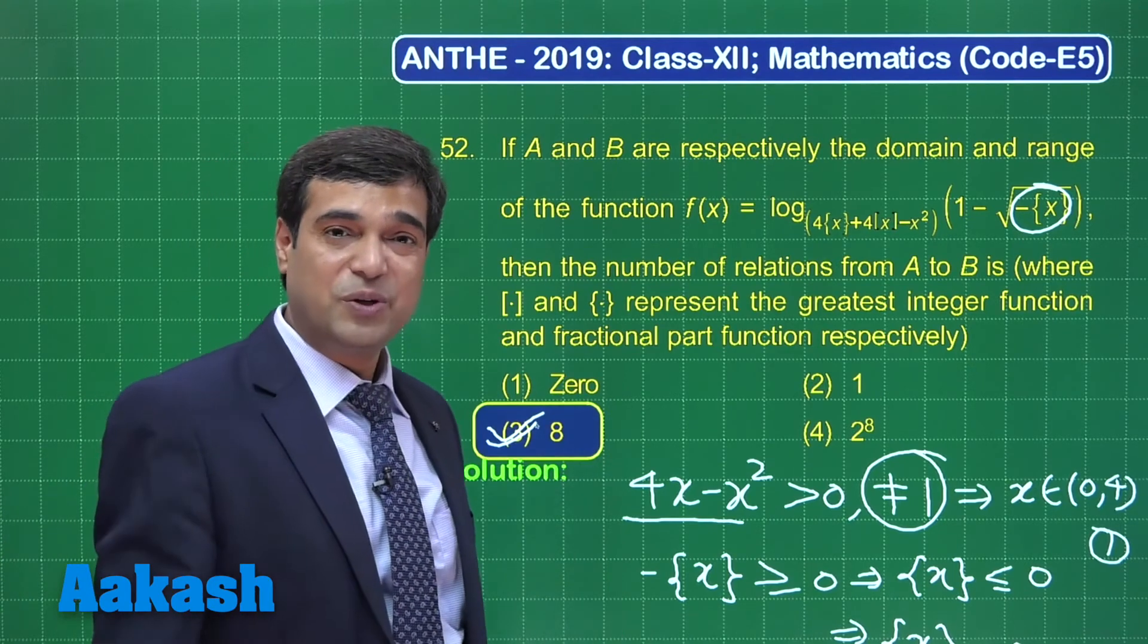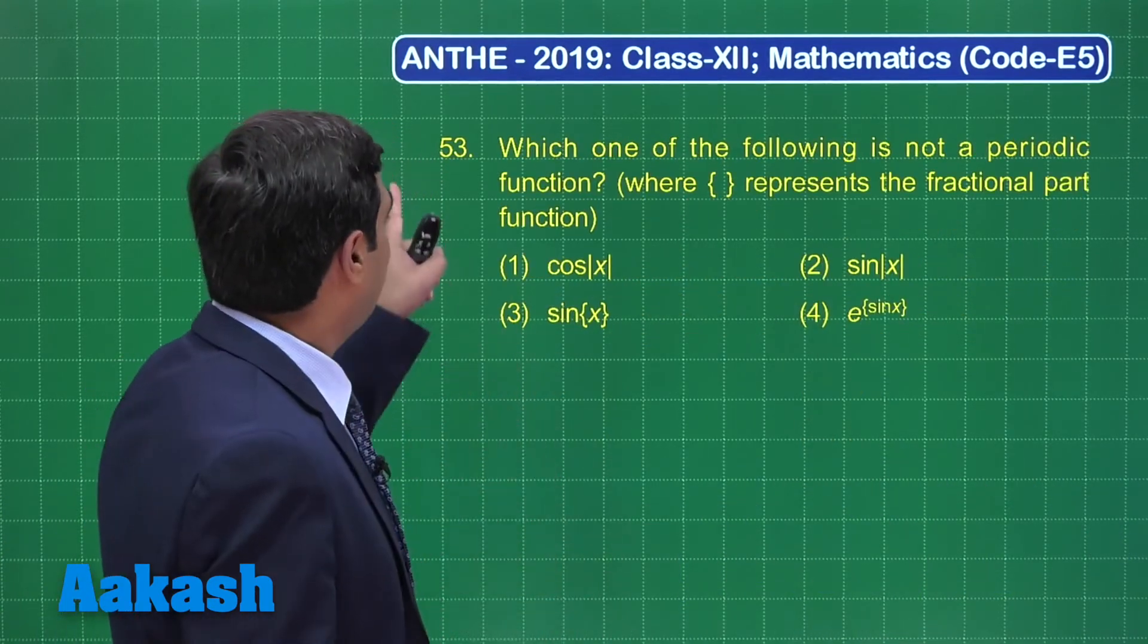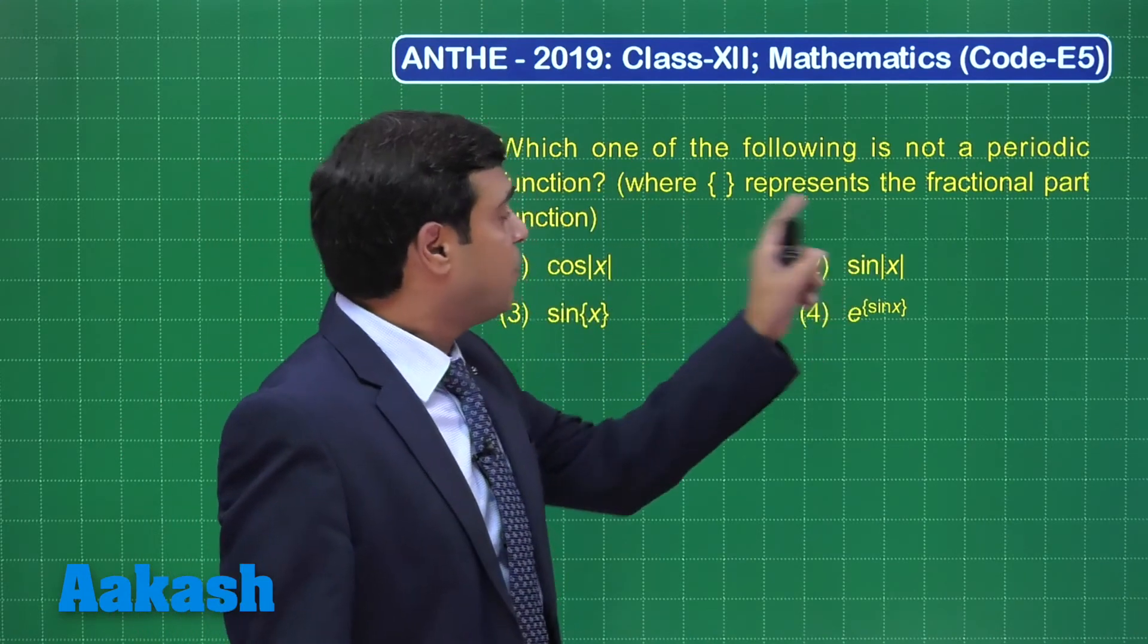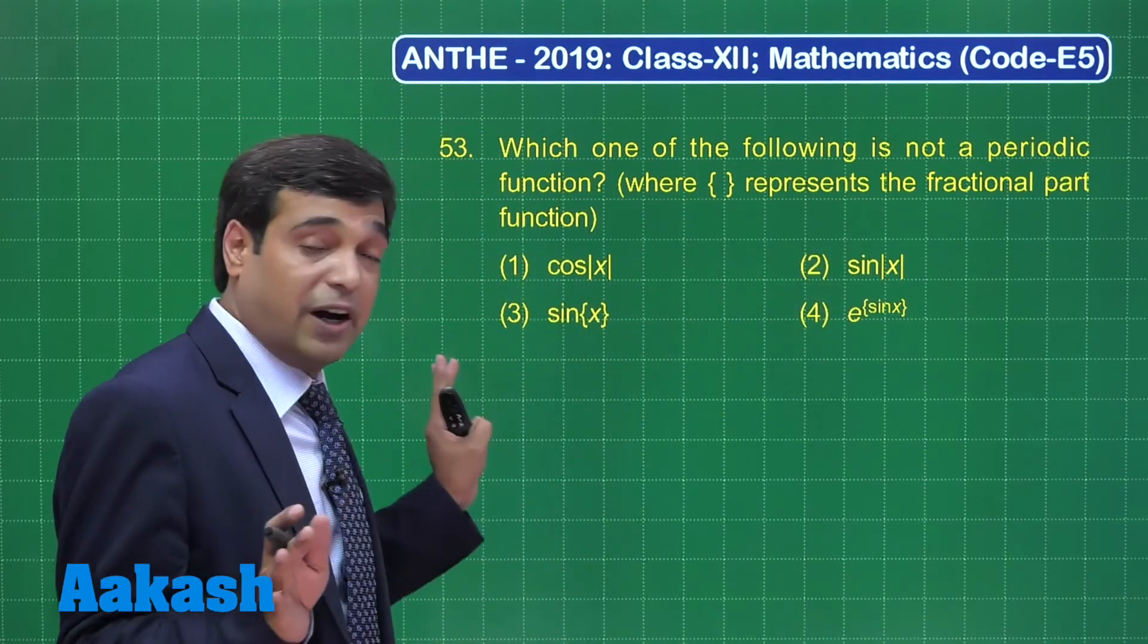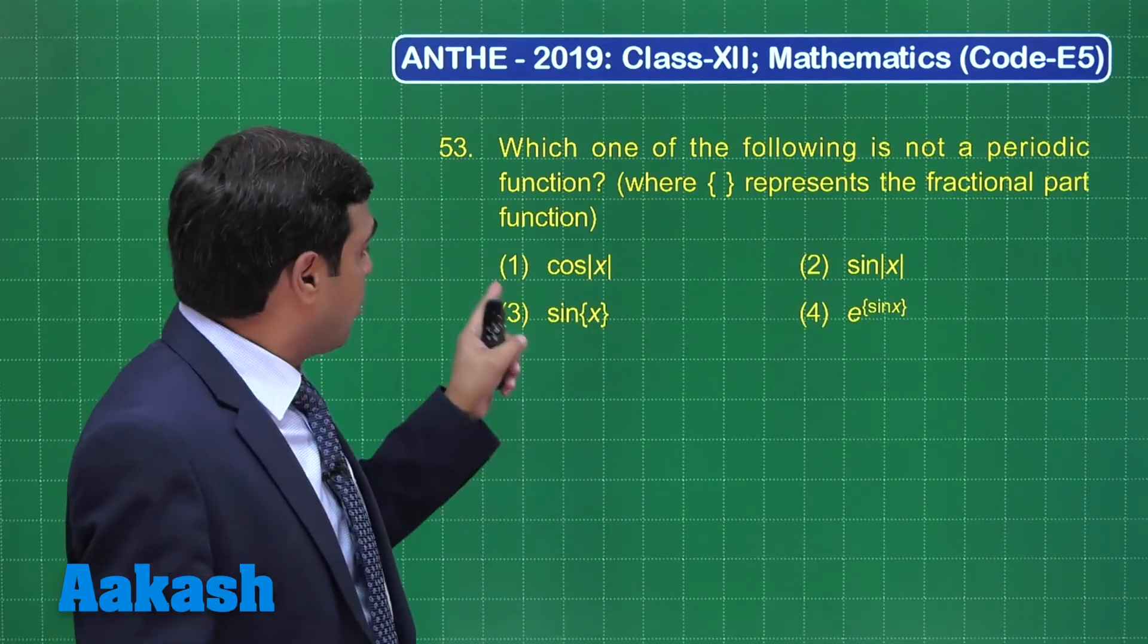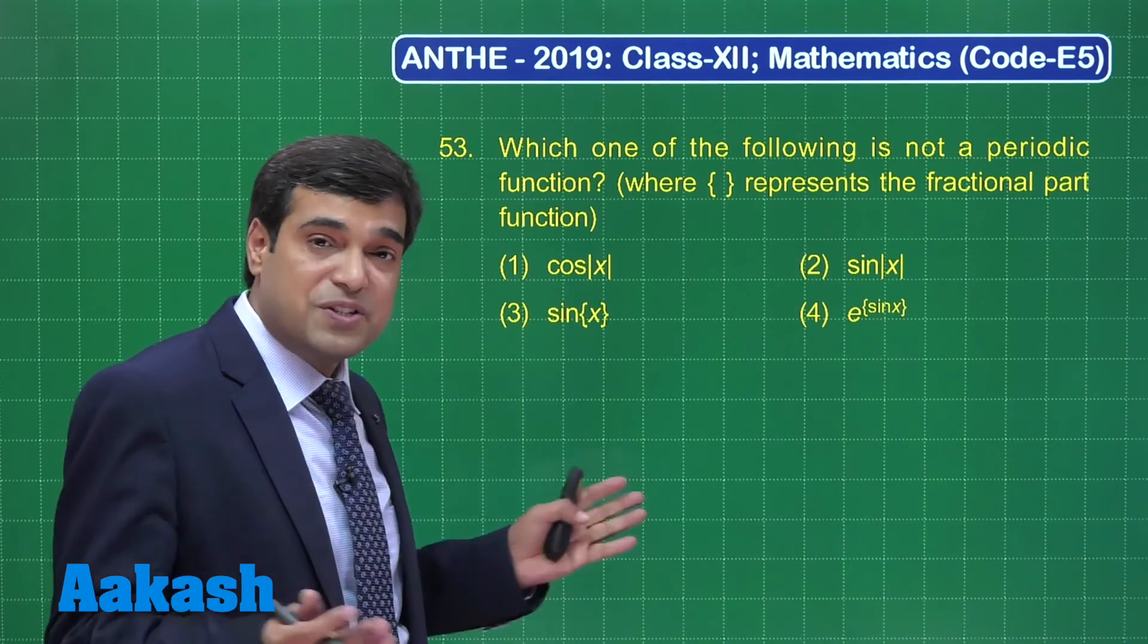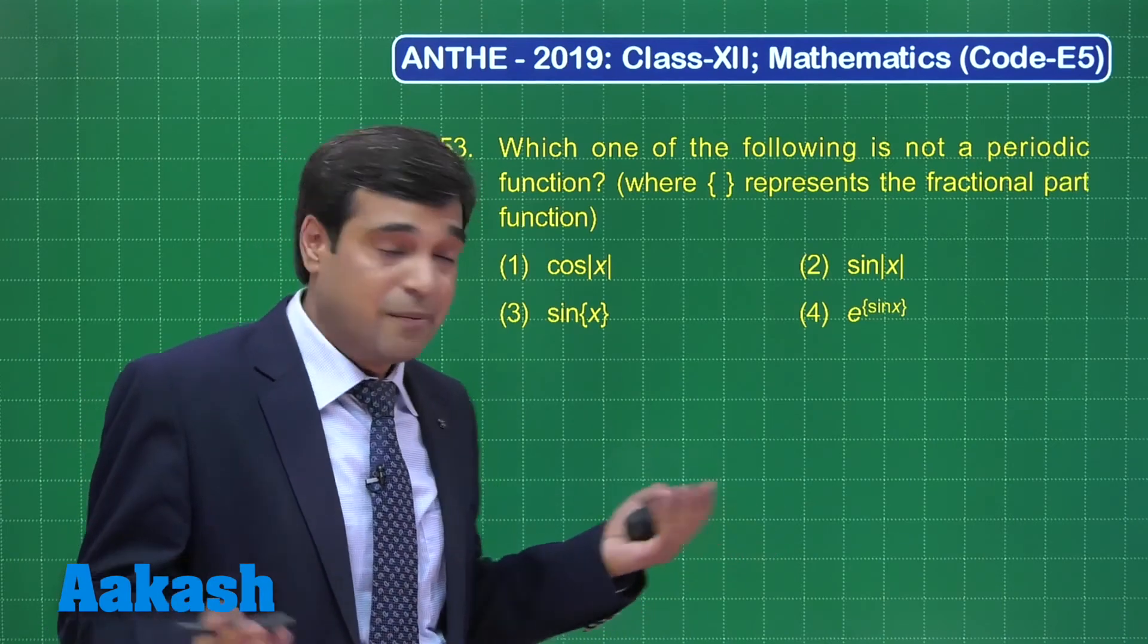So I am sure this simple question is also clear to you. Let us consider the third question from this paper, which is question number 53: Which one of the following is not a periodic function? Let us look at the four options carefully. cos|x|, how the cos|x| would be drawn? cos θ or cos(-θ), it is same, meaning this is simply cos of x, so it is not going to make any difference. Yes, it is a periodic function.